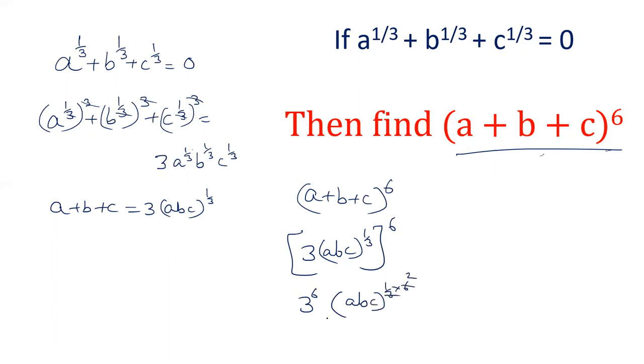This gives us 3^6 is 729, abc raised to power 2, and the final result comes out to be 729a²b²c².